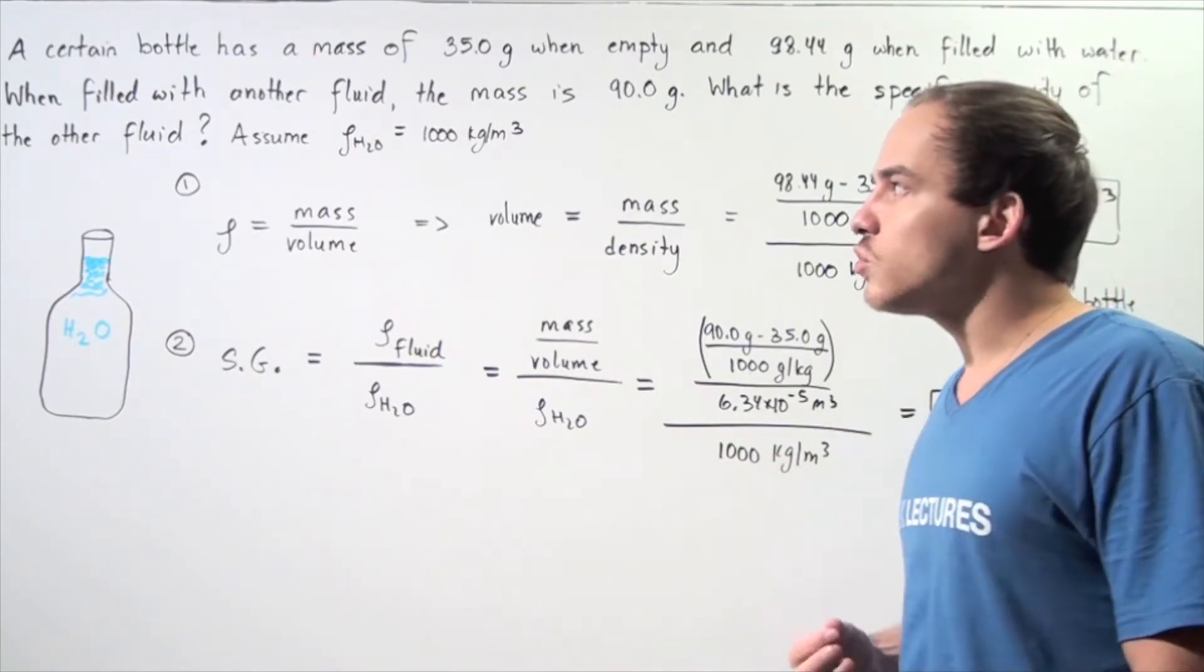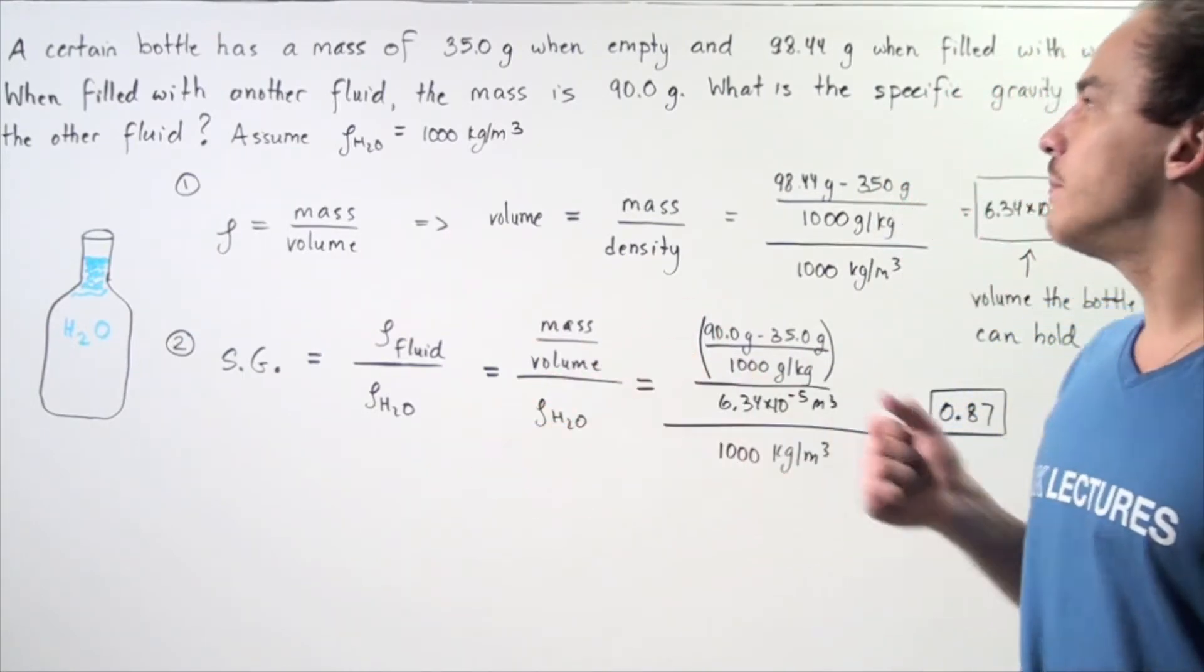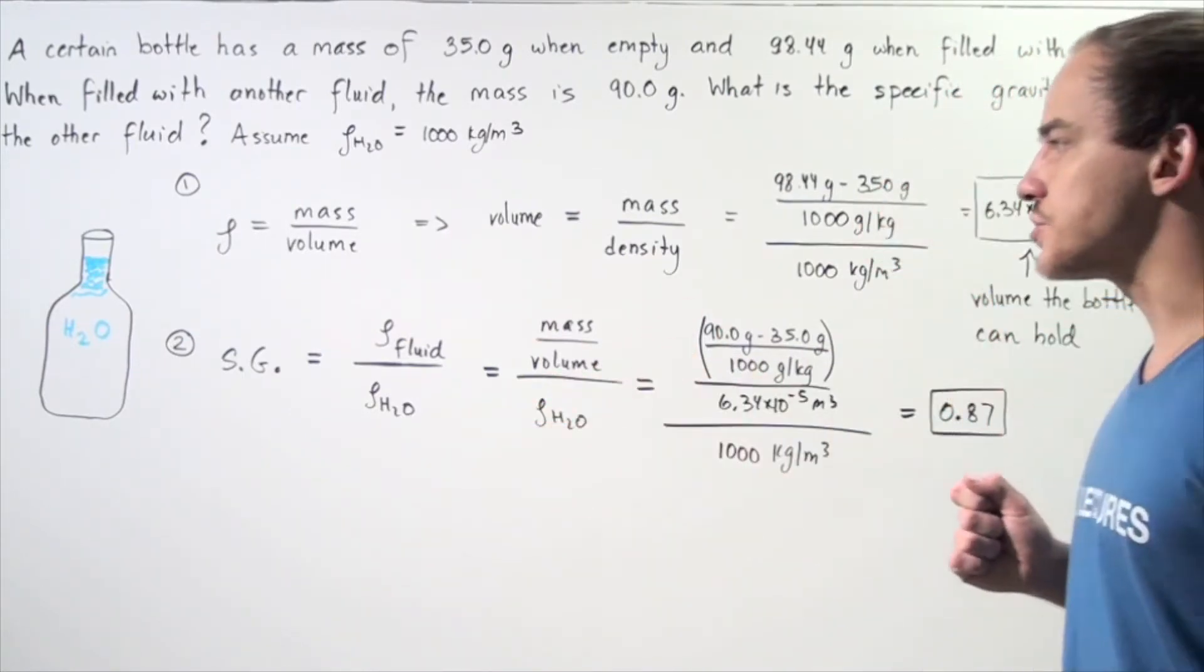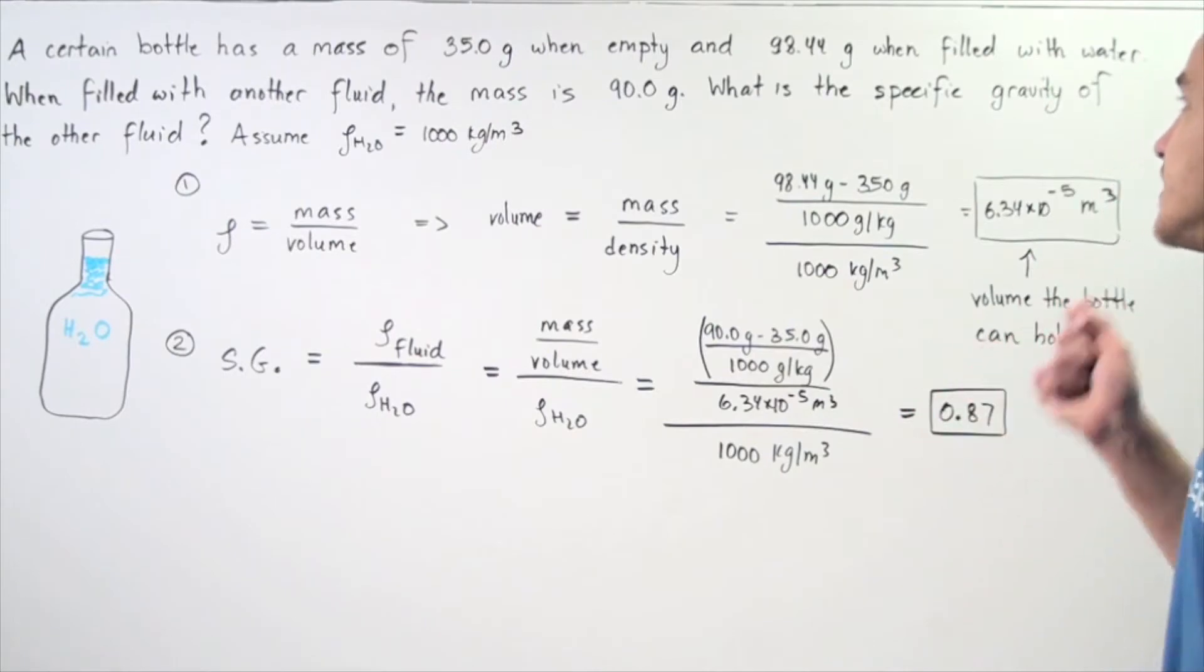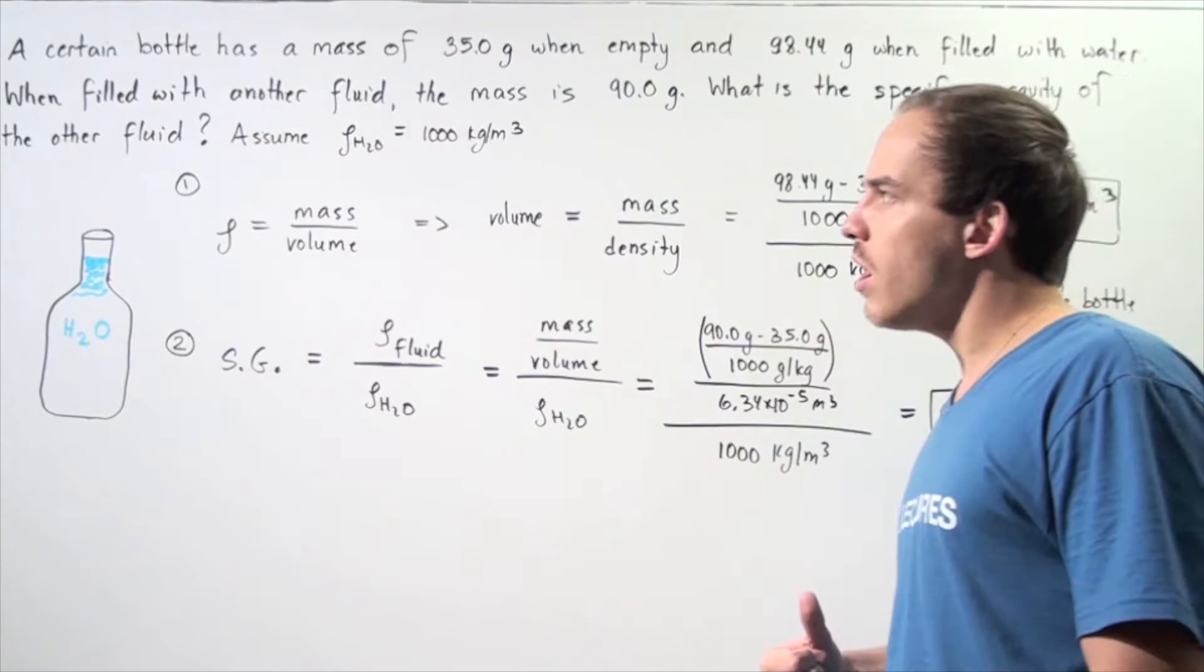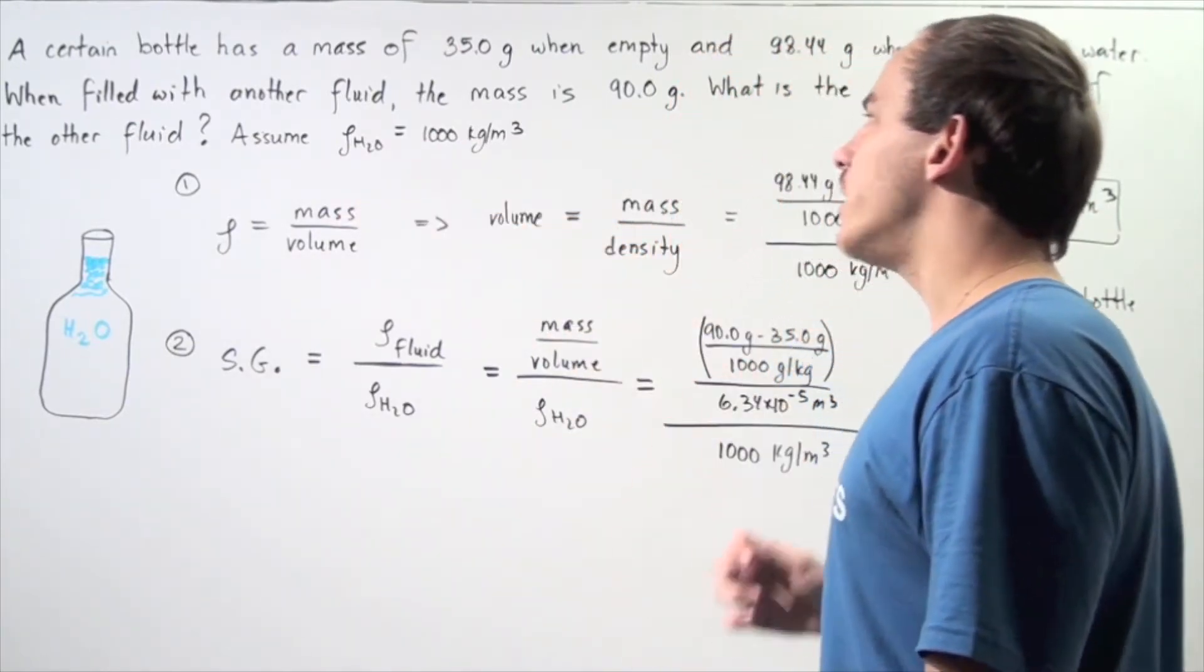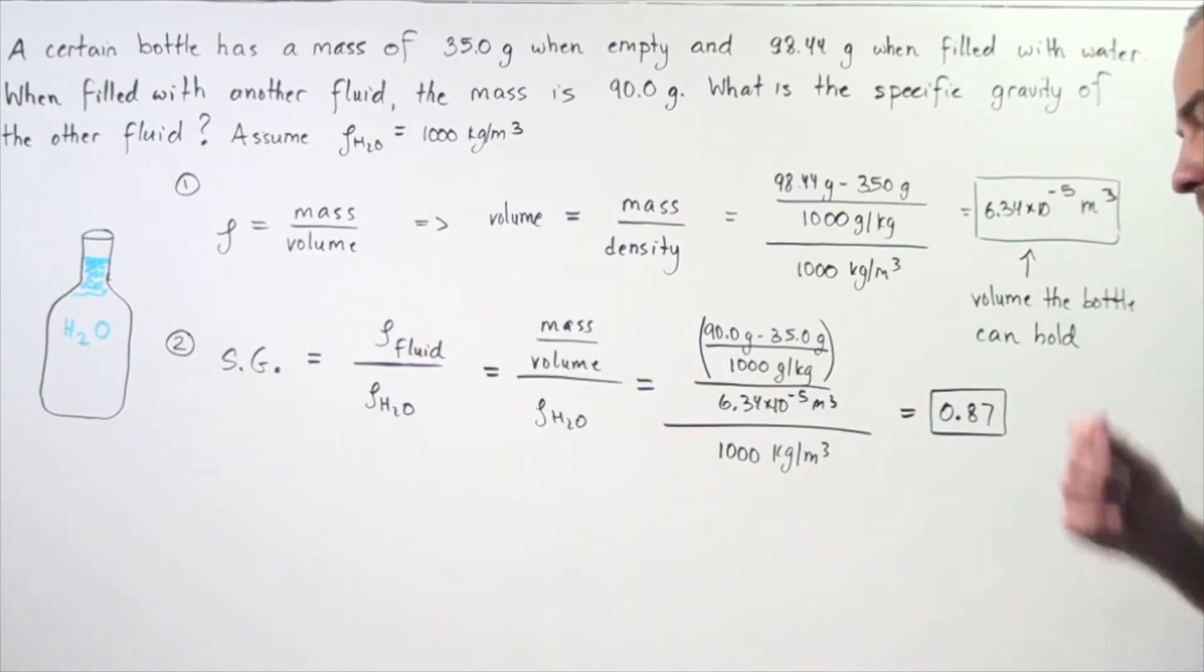Now, let's suppose when filled with another fluid, the total mass of the fluid and the bottle is 90 grams. So, what is the specific gravity of the other fluid compared to the density of water, assuming that the density of water is 1,000 kilograms per meter cubed?